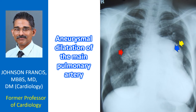In post-stenotic dilatation of the main pulmonary artery seen with valvar pulmonary stenosis, the right pulmonary artery will not be dilated. But the left pulmonary artery can be dilated in pulmonary stenosis, as the jet is directed towards the left pulmonary artery. Here is the left pulmonary artery.